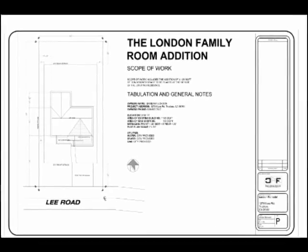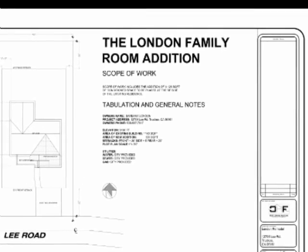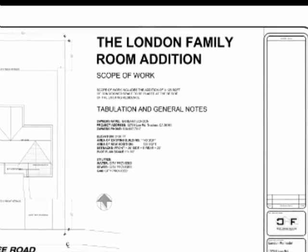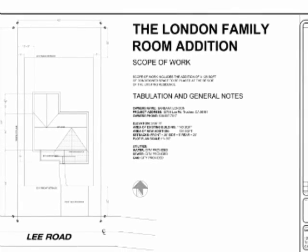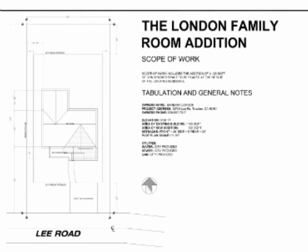The first sheet that you will encounter is the plot plan or cover sheet. For example, this cover sheet shows you the general scope of work, square footage of the house, square footage for the project, and the area that will be built. The plot plans will also show you the corners of the property as well as the dimensions for the area where the house needs to be built.